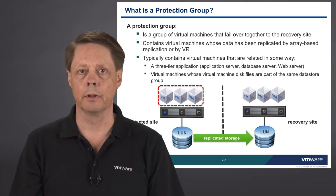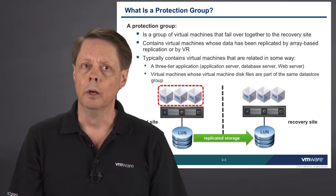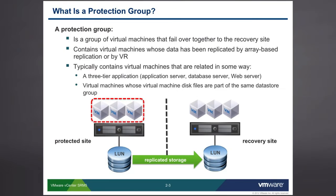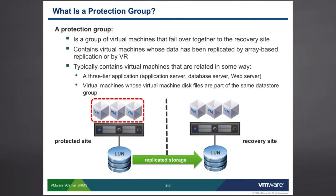We can dictate things like startup sequence in the actual failover plan, but the actual act of saying they're going to failover together is defined by the protection group. It contains virtual machines if data has been replicated by array-based replication or by vSphere replication. Remember, vSphere replication isn't controlled based on where the virtual machine itself is stored. You pick — I want VM1 and VM7 and VM9 and my database VM to be replicated. And once you've made that selection, you can then choose to create what we call a protection group, and those would be VMs that failover together.